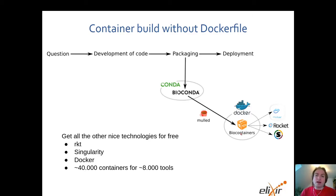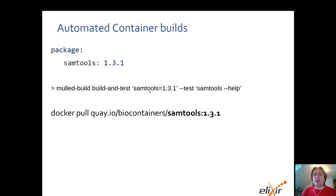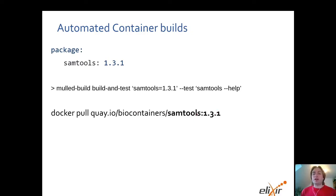So how do we do that automatically and efficiently? For that we created a nice command line tool. Given you want a container for a tool called samtools version 1.3.1, if you type this command — malt build — you can specify that you want to build and test a tool. You just give it the name and version of the package you want to containerize, optionally add a test, and the tool creates the given container. The container name is samtools at that specific version, and the container is minimal.